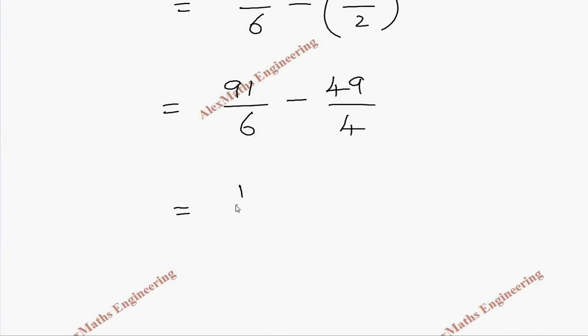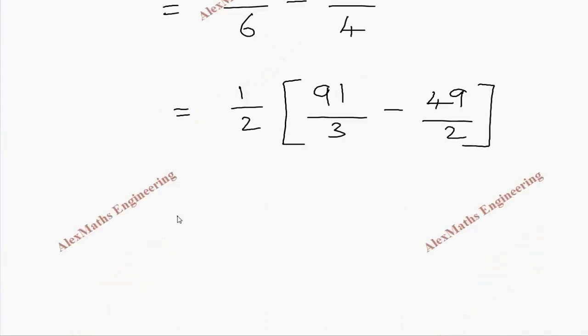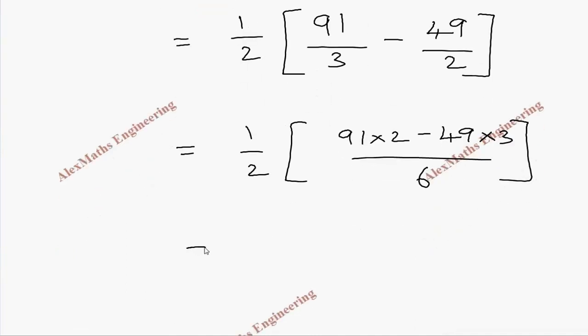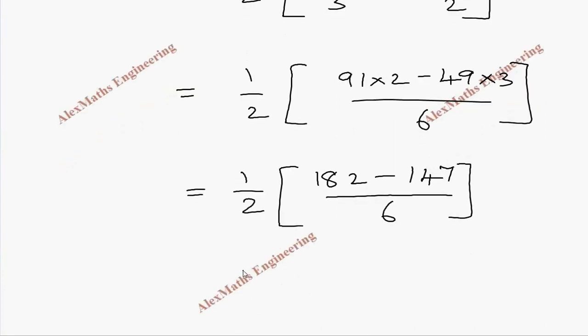For easier calculation, we can take 1 by 2 common. So that it is 91 divided by 3 minus 49 divided by 2. So, we can take LCM which is 6. So, 1 by 2 into LCM is 6. This is 91 into 2 minus 49 into 3. Now, totally this is 1 by 2. And numerator is 182 minus 147. Whole divided by 6. After subtraction, we get 35 in the numerator. And denominator is 12.